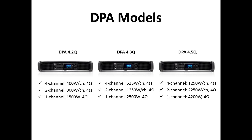The power ratings are the same regardless of whether it's a network or analog input. The 4.2 is conservatively rated at a continuous 400 watts per channel into 8 ohms, the 4.3 at a continuous 625 watts into 8 ohms, and the 4.5 at 1250 watts per channel continuous.